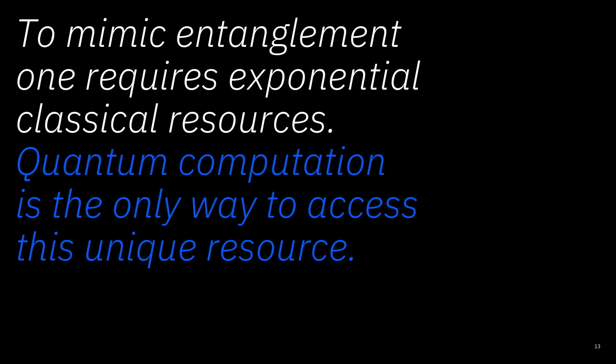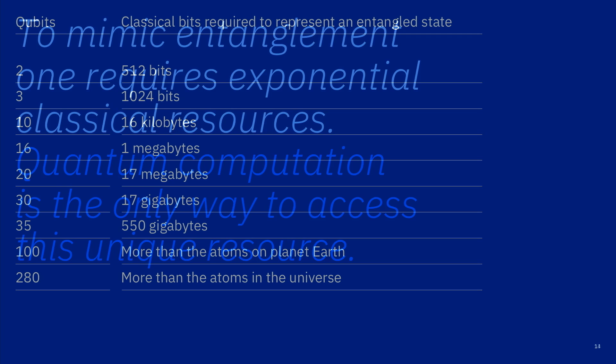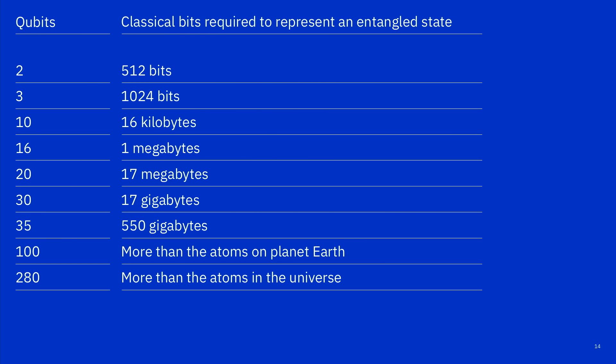Now, to mimic that property that we know exists, if we wanted to mimic that classically with a normal computer, it would be exponentially costly. How costly? Let me give you an example. If you wanted to describe with our everyday computers what take two qubits, two quantum bits that are entangled, that have this special property, and you say let me represent that classically. Well, if you just had two qubits, it will take you 512 bits. You can see sort of the list. By the time you have 35, you can still do it, 550 gigabytes, but it's an exponential.